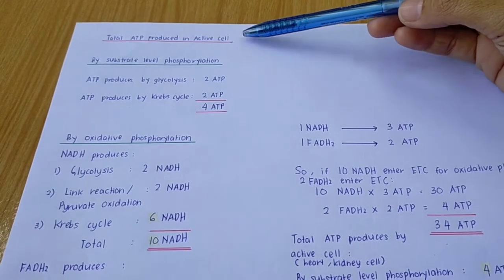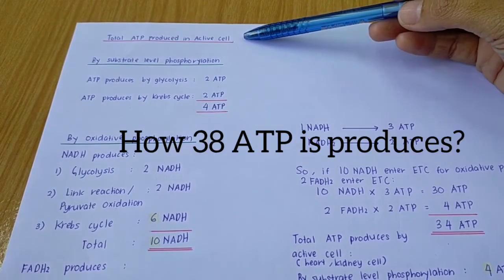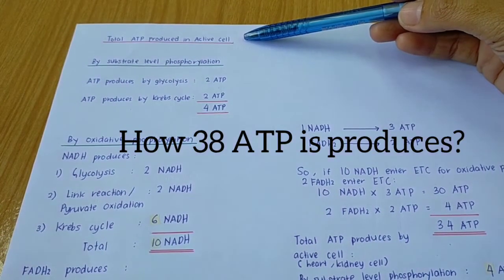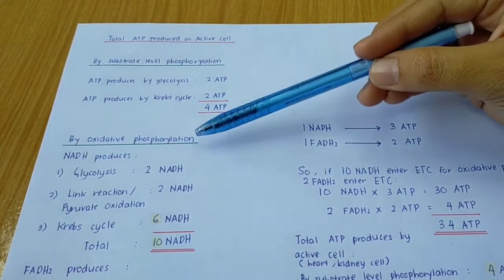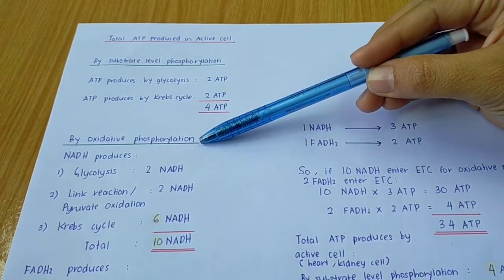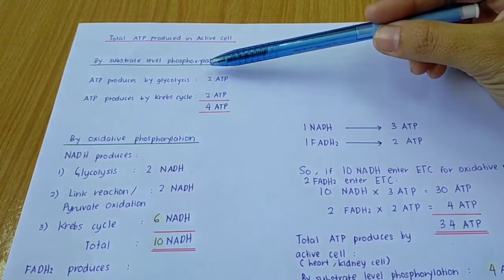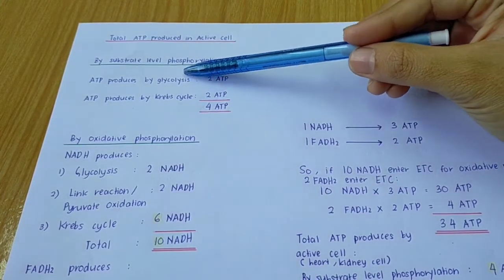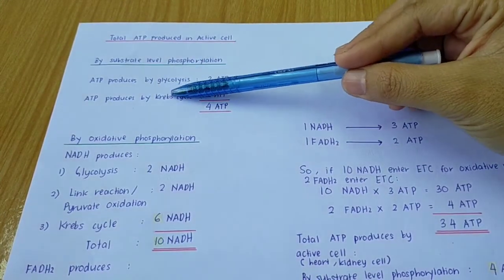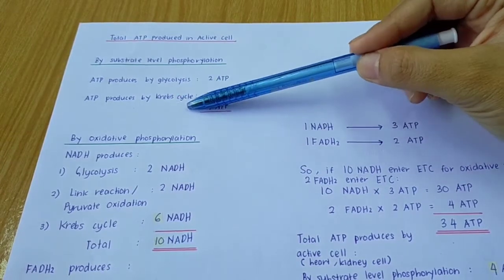Now we look at the total ATP produced in active cells. ATP is produced by substrate-level phosphorylation and also by oxidative phosphorylation. By substrate-level phosphorylation, ATP is produced by the process of glycolysis and also the Krebs cycle.